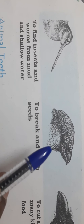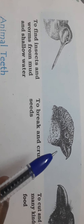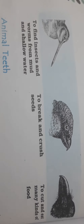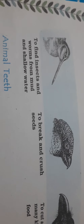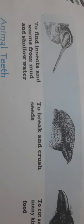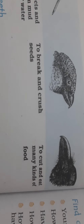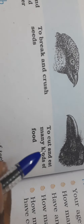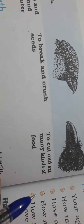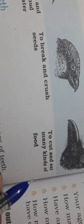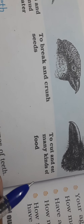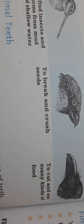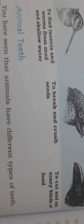This beak belongs to birds like the crow — to cut and eat anything, whether wage or non-wage food. Now — animal teeth. You have seen that animals have different types of teeth. The cow has short front teeth for snipping grass, and the teeth on the sides are large and flat for chewing the grass.